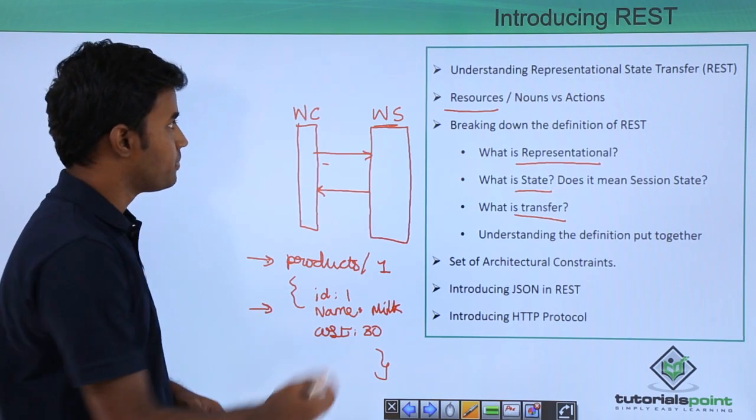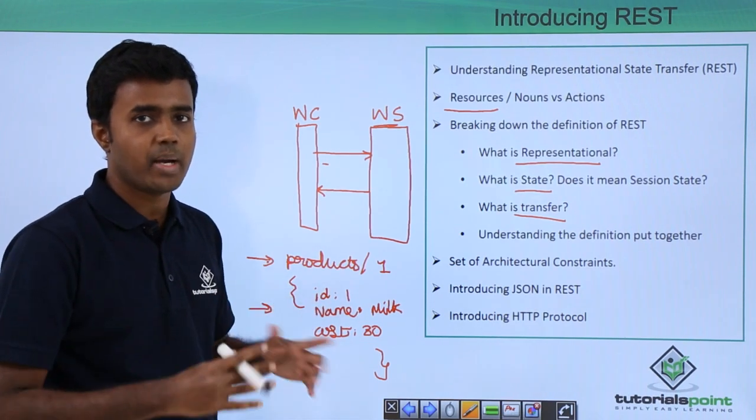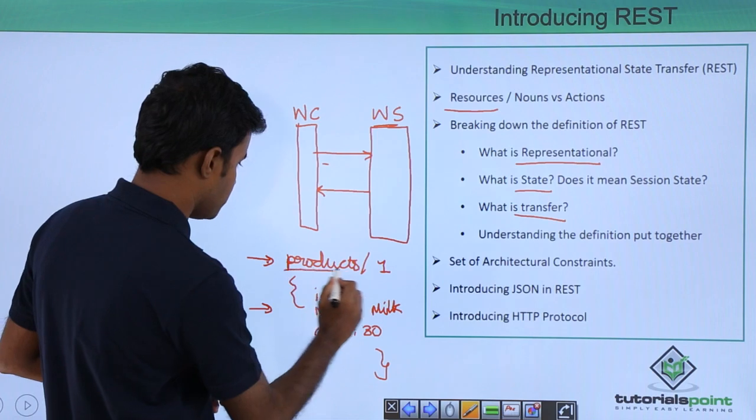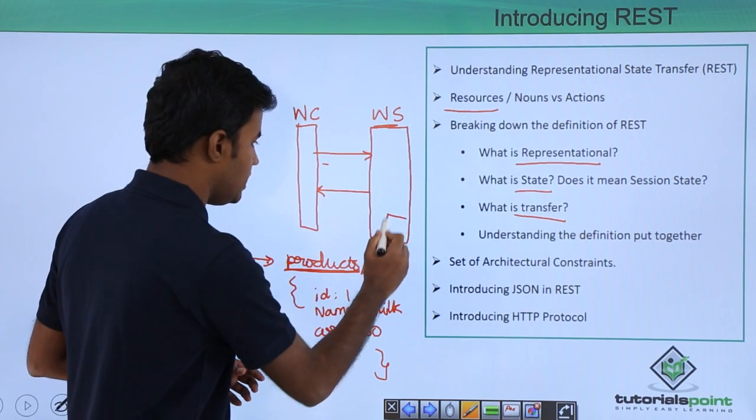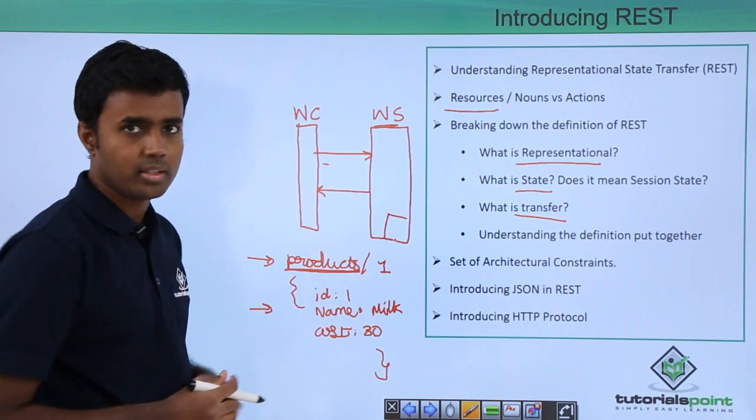If you see here, resources are something that are held by the server. For example, this is a particular resource. Products is a resource which is there within the server and the client is requesting for it.